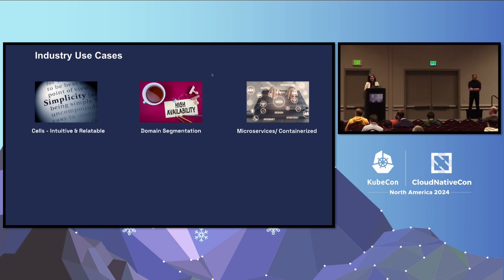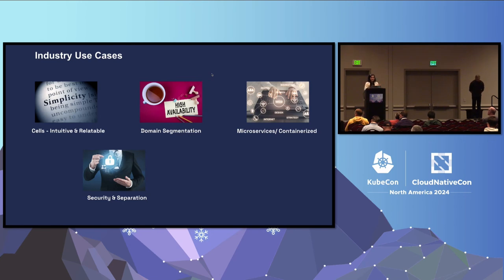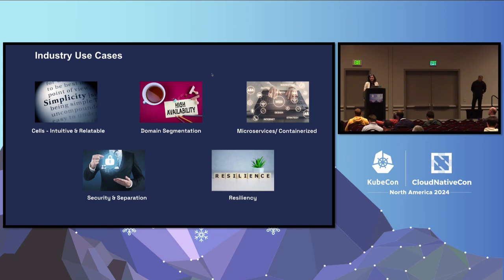Third is security and separation — in places with strict regulations where you want to maintain clear boundaries and cells must explicitly communicate with each other. I delved into this in detail at KubeCon Paris, where more details are available. Fourth is resiliency — AWS-based systems designed around cell-based architecture use it for regional or availability-zone-wise separations, keeping multiple cells floating. These are the four major use cases across the industry; if you have more to share, please do after the session.